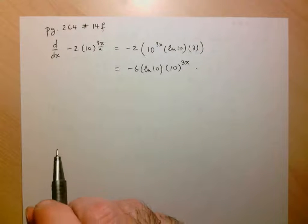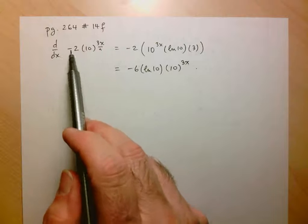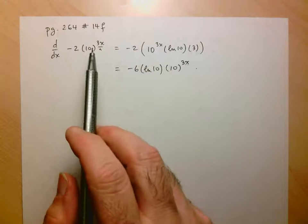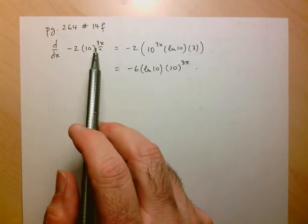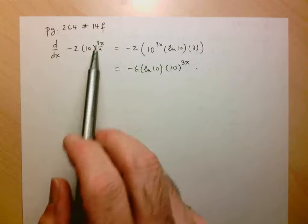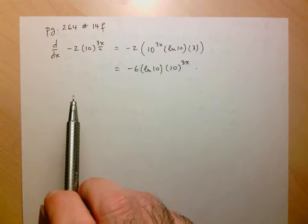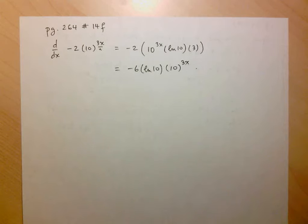So again, just to recap, recognize that the negative 2 is just a constant multiplying the function, recognize that the function is an exponential function, but we have to use the chain rule because the exponent is something more complex than just x. That's it for this one.